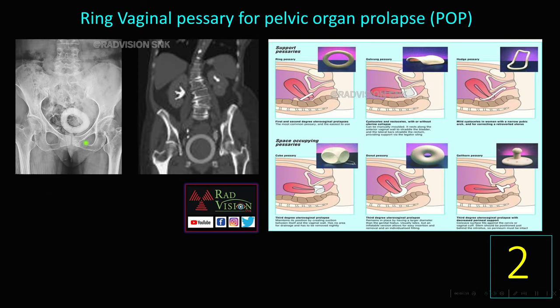The second case is nothing but a ring vaginal pessary. Most people thought this may be a foreign body, but this is called a ring vaginal pessary, commonly used for pelvic organ prolapse. On CT, there are different types of support pessaries for pelvic organ prolapse for first, second, and third degree prolapse: ring pessary, Gehrung pessary, Hodge pessary, cube pessary, donut pessary, and Gellhorn pessary. Whenever you see a well-defined ring-like structure in the pelvis, one differential diagnosis will be ring vaginal pessary.